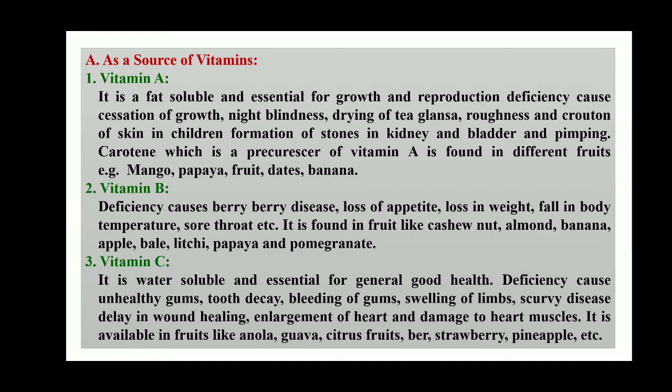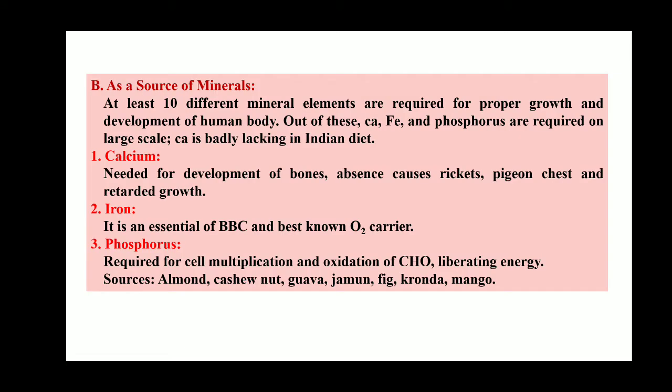Fruits are a source of vitamins. Vitamin A is found most in mango, papaya, dates, and banana. Vitamin B is found in cashew nut, almond, banana, apple, bell, lychee, papaya, and pomegranate. Vitamin C is gaining a lot of importance, especially during the COVID-19 pandemic. Rather than consuming tablets, we can get vitamin C from horticultural crops like amla, guava, citrus fruits, ber, strawberry, and pineapple.